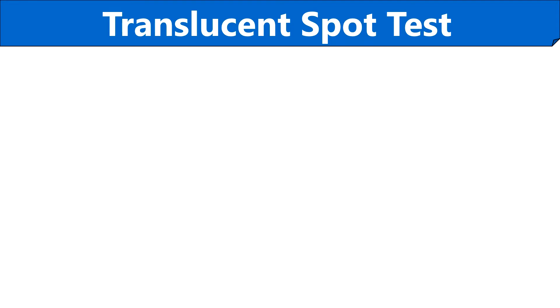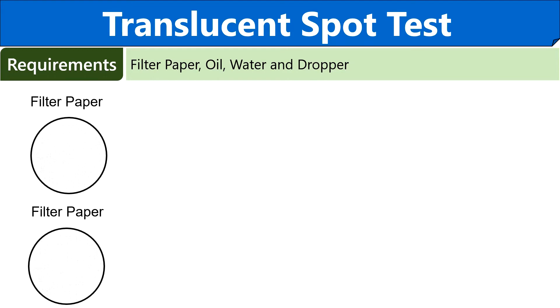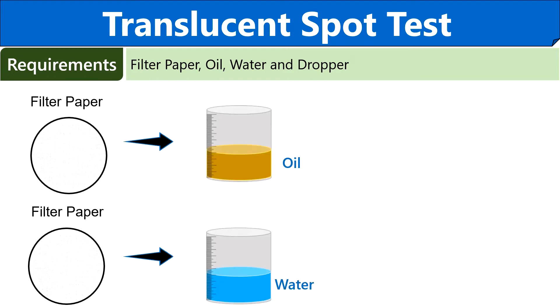The translucent spot test is an easy procedure to identify lipids based on the formation of a translucent and greasy spot on filter paper. To perform the test, we need filter paper, a lipid or oil sample, water, and a dropper. First take 2 filter papers, then take an oil and water sample, and add a drop of oil to the filter paper.